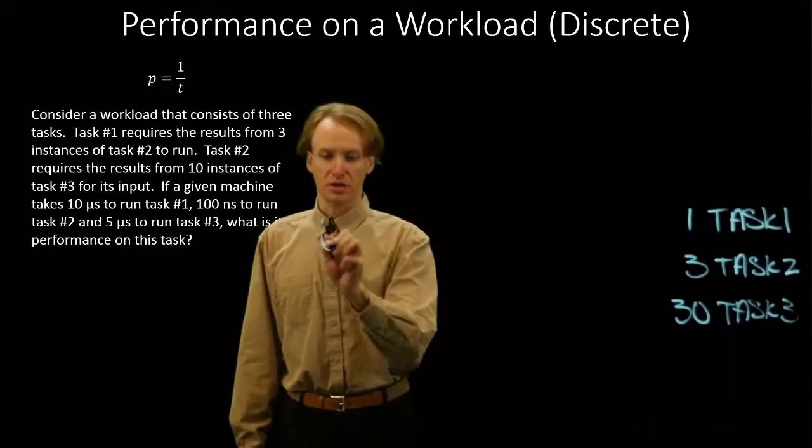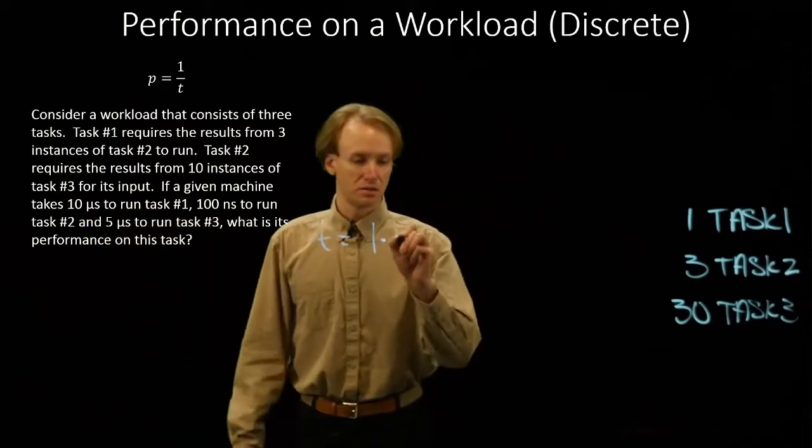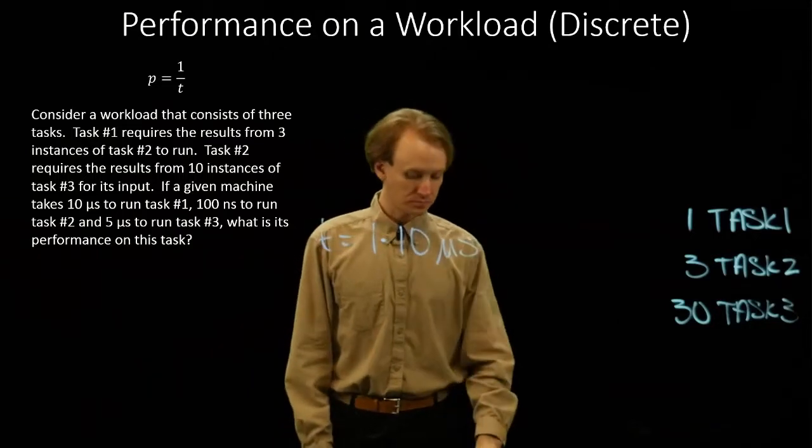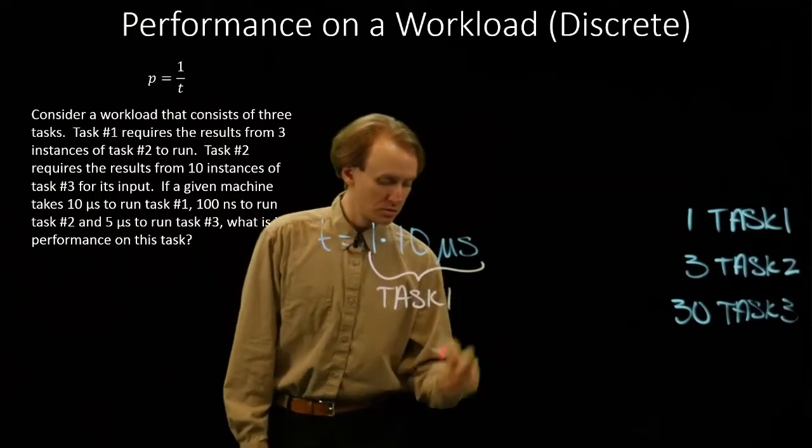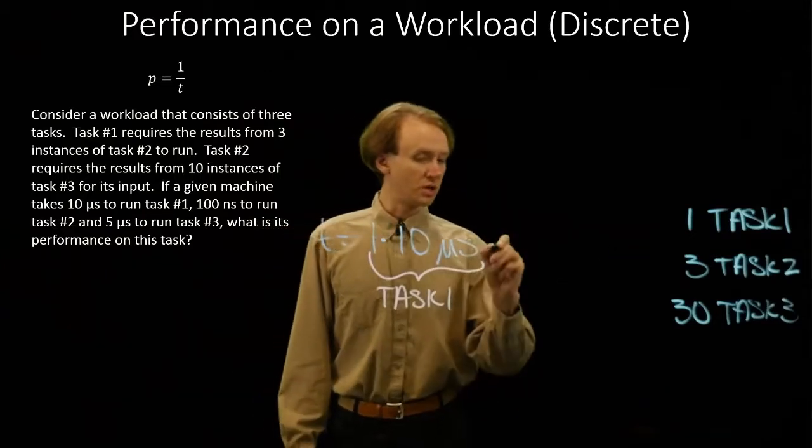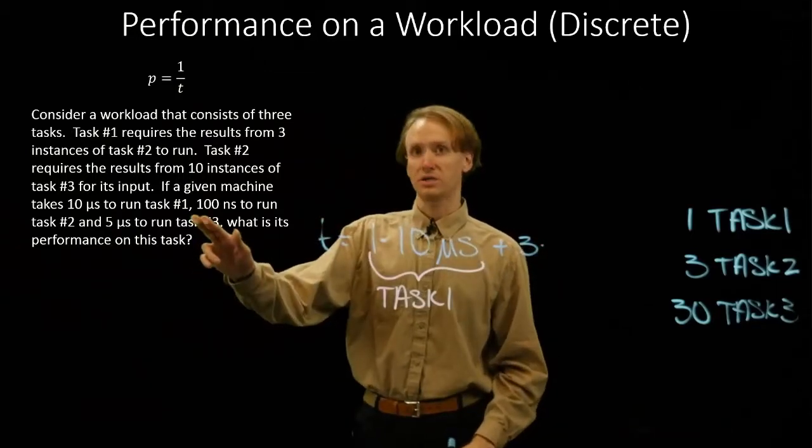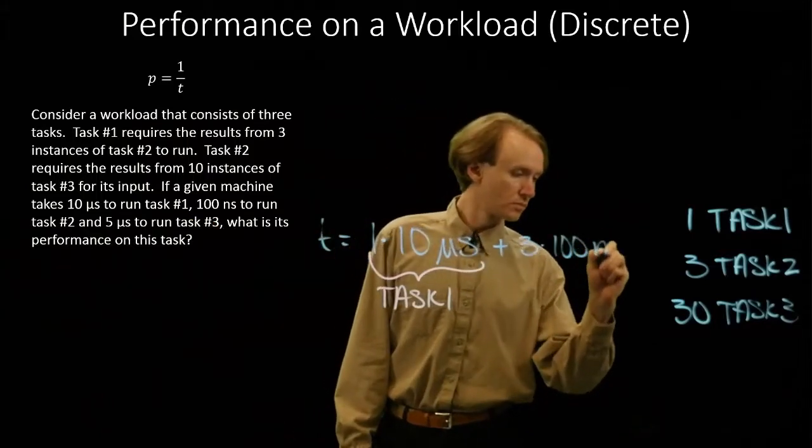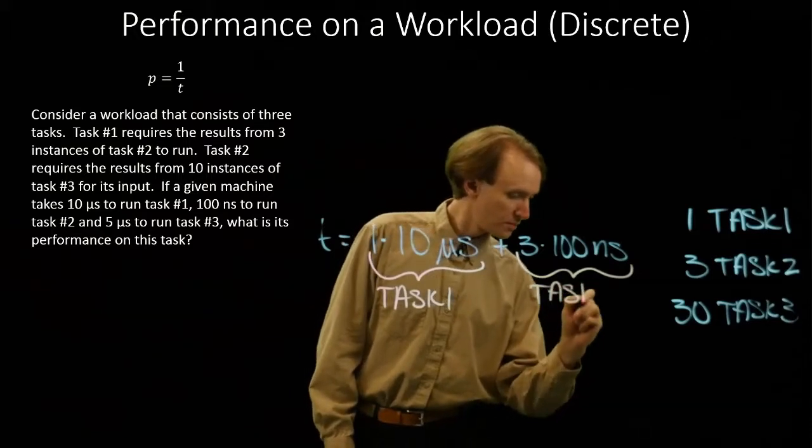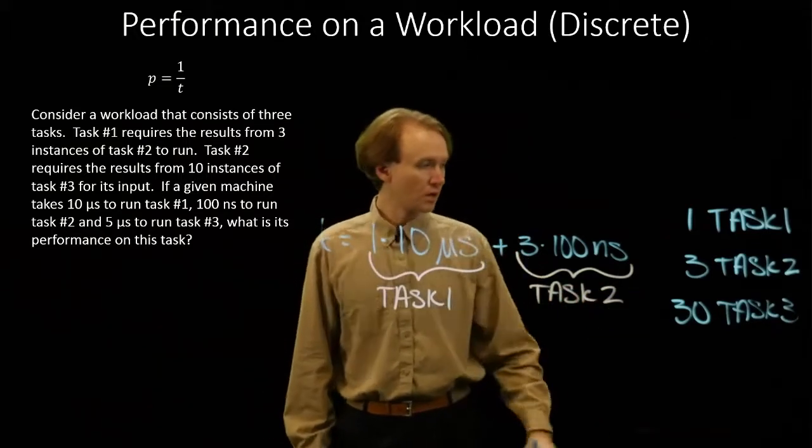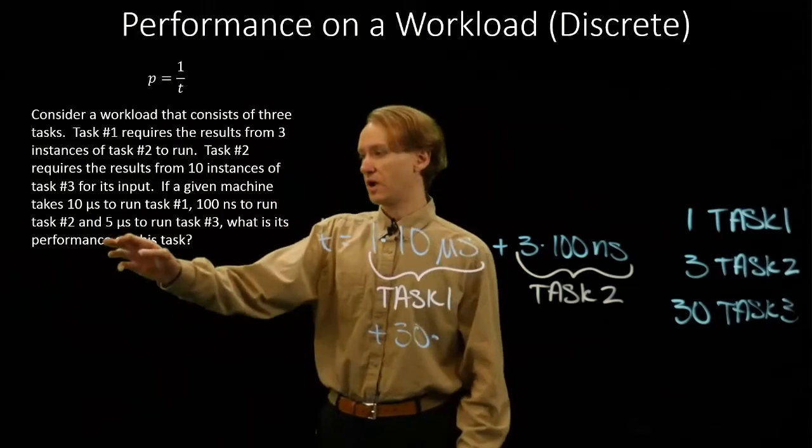So to calculate our execution time we'll have one instance of task 1. And task 1 will take ten microseconds. So ten microseconds. So that's how long it takes to run task 1. We'll need to run three instances of task 2. So we have three times 100 nanoseconds. And now we'll need thirty instances of task 3. And task 3 is taking five microseconds.